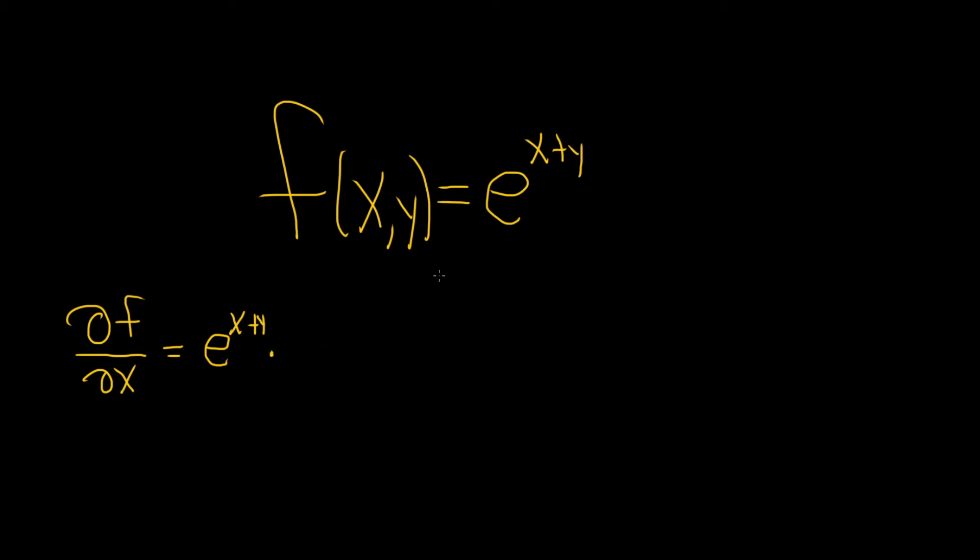So let's think about that. We're taking the derivative of the inside. So the derivative of x is 1, plus the derivative of y is 0 because it's a constant. So this is equal to simply e to the x plus y.